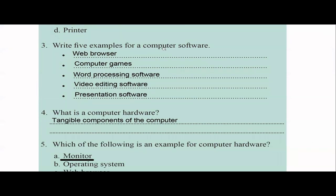Write five examples for a computer software. So you have so many computer softwares in your machine: web browsers, which is needed to go internet, computer games, word processing softwares, video editing softwares, presentation softwares. So there are so many softwares. We can have like spreadsheets and Paint kind of things and graphic designing softwares. So there are so many softwares like there. So you can give some examples.